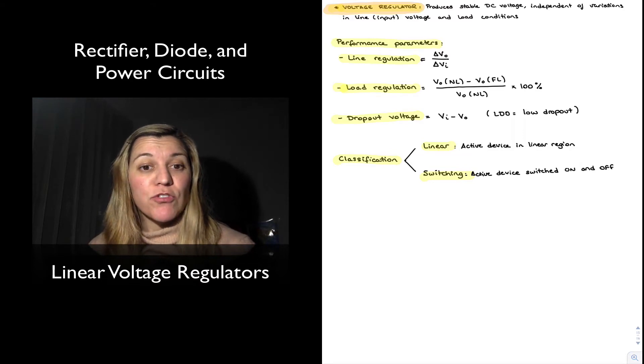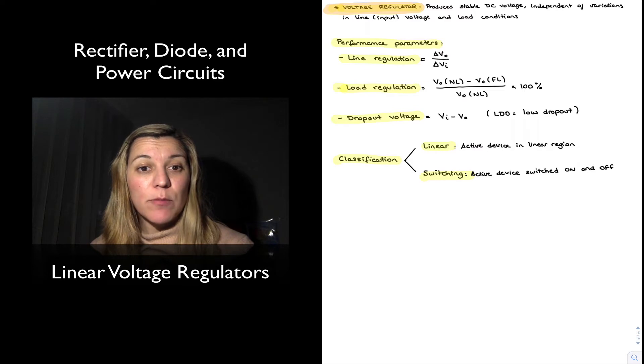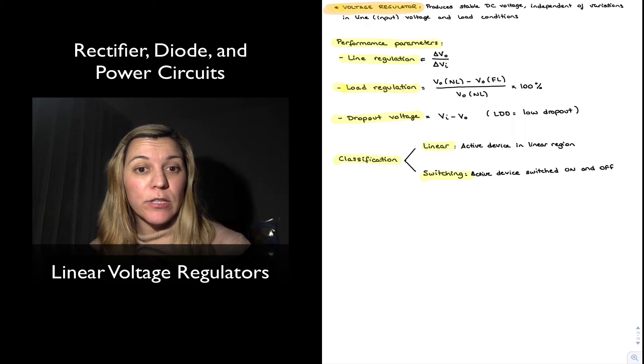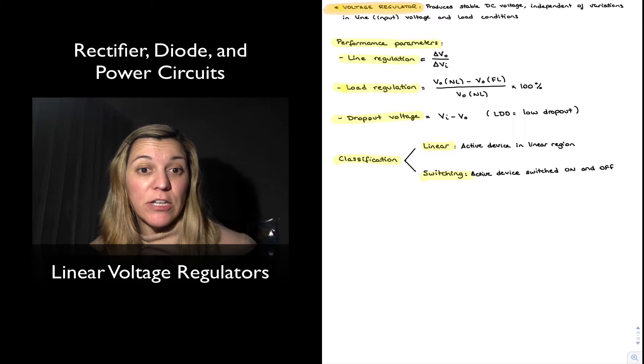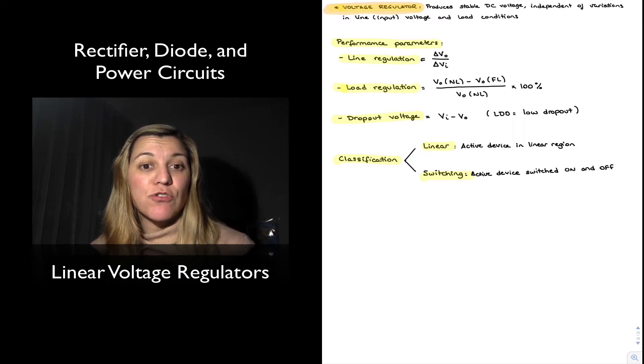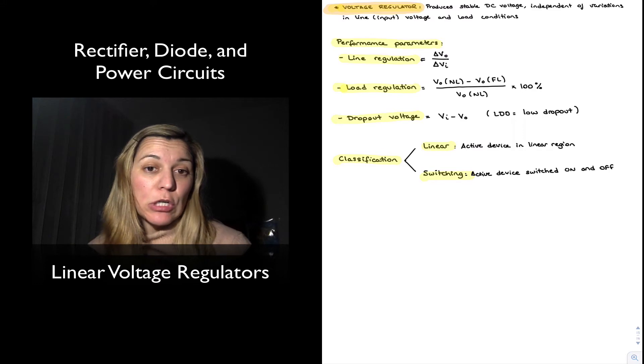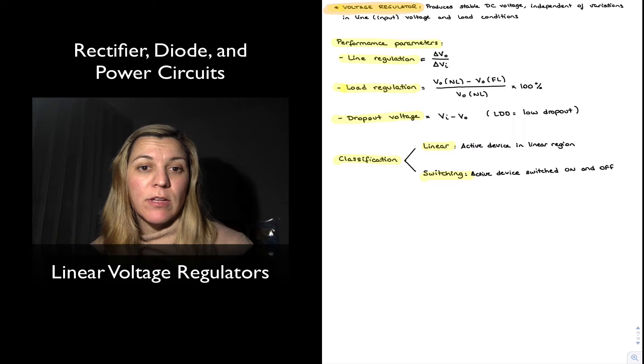If we recall, a voltage regulator is basically a circuit that provides a stable output DC voltage which is meant to be robust or independent of variations in line voltage, meaning variations in input voltage or unregulated input voltage, and also robust to variations in loading conditions. Whether the load is drawing zero current, meaning no load is connected, or a load that is drawing the maximum amount of current, the variation in output voltage based on those extreme conditions is what the load regulation will measure.